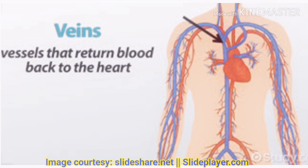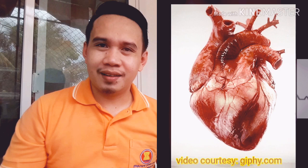Before the capillaries leave an organ or tissue, they unite to form larger blood vessels called venules. Venules in turn join to form larger veins. That is the main job of our veins in the blood vessels. So why is the heart an important organ in our body?